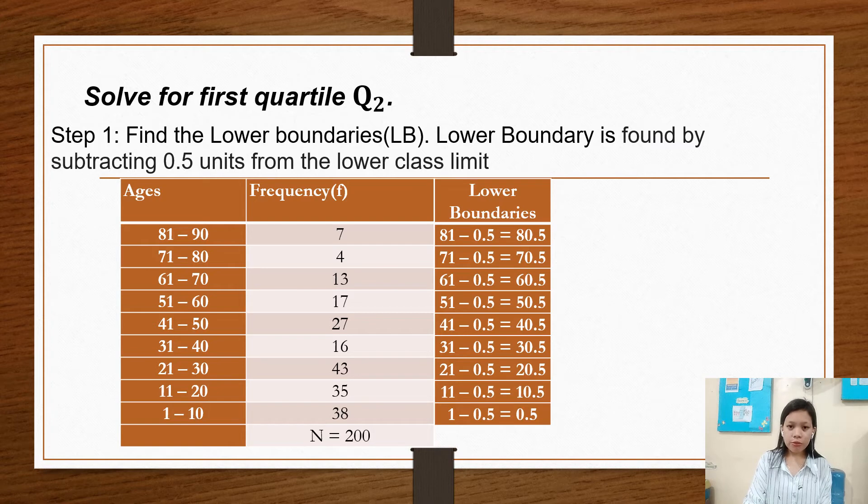So step 1, find the lower boundaries. Lower boundary is found by subtracting 0.5 units from the lower class limit. So in our ages, for example, we have 81 to 90, our lower ages is on the left side. So our lower boundary is 81 minus 0.5 equals 80.5.